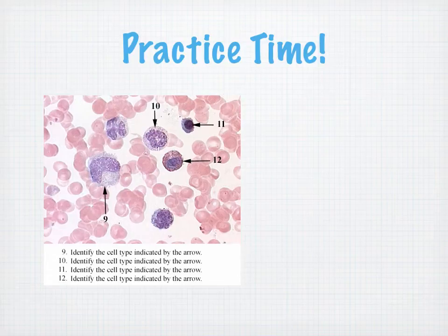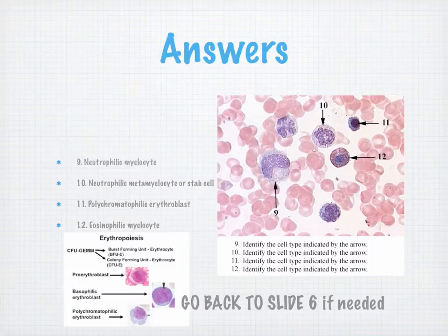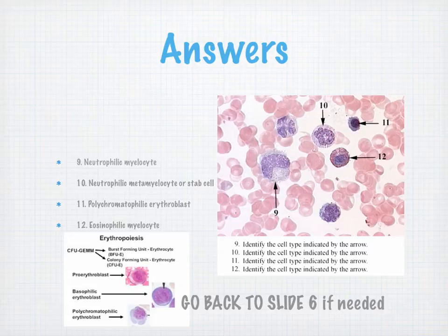Practice time: identify the cell types indicated by arrows in images 9, 10, 11, and 12. The answers are: a neutrophilic myelocyte, a neutrophilic metamyelocyte (also known as a stab cell), a polychromatophilic erythroblast in number 11 — which is a trickier one — and an eosinophilic myelocyte in number 12. There's also an insert showing erythropoiesis with the polychromatophilic erythroblast.